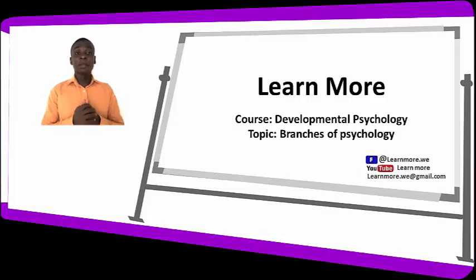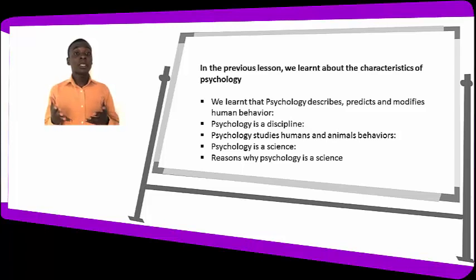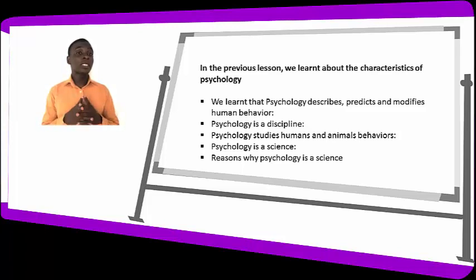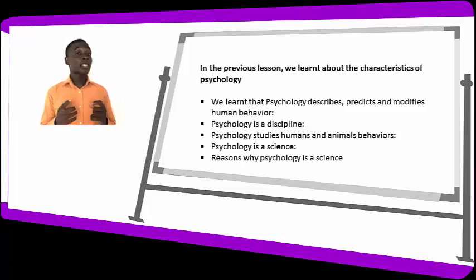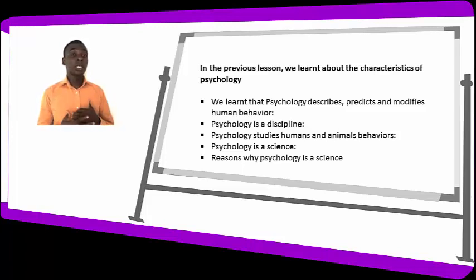Welcome to Learn More. In the previous lesson, we learned about the characteristics of psychology — that psychology predicts, describes, and modifies human behavior. We also learned that psychology is a discipline that studies human and animal behavior, and that psychology is a science. We also looked at the reasons why psychology is a science.